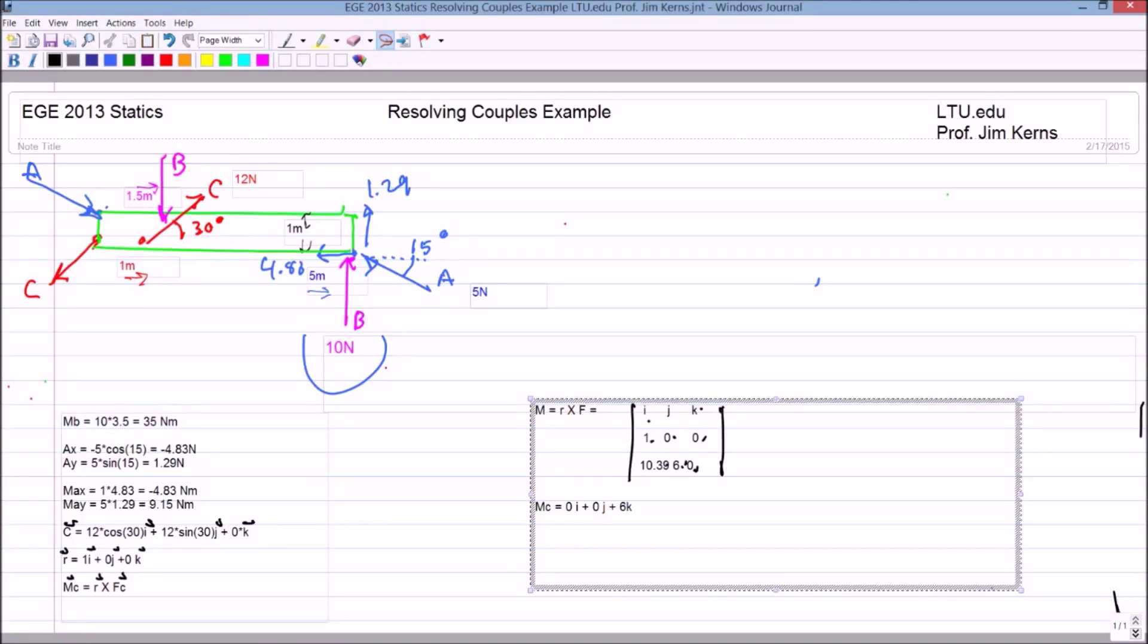And then I can just add all three of those couples together, and it doesn't matter that they're applied at different places on that because we defined that the couple as a free vector, so that I can say that the sum of my moment total, and these are all about the z-axis, because it's a two-dimensional problem here.